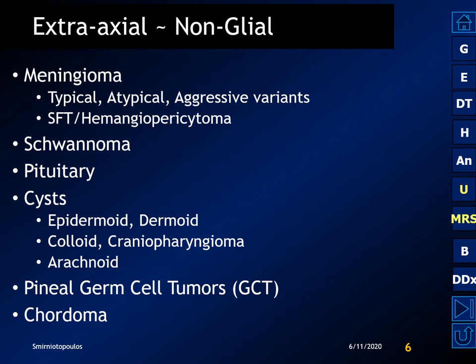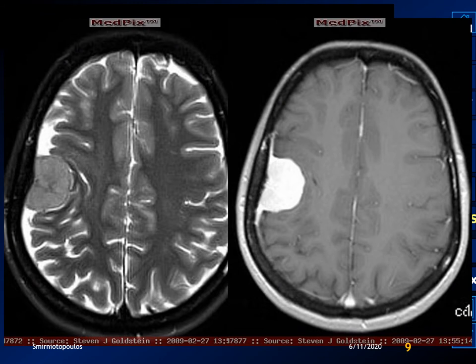Other extra-axial neoplasms include schwannomas, pituitary adenomas, various cysts, pineal germ cell tumors, and chordomas.